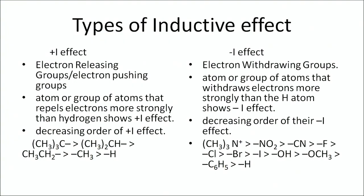There are two types of inductive effect: +I effect and -I effect. The +I effect depends on which group is attached to the carbon chain. If electron-releasing or electron-pushing groups are attached, they show the +I effect. If electron-withdrawing groups are attached, they show the -I effect.